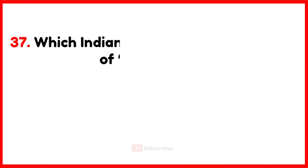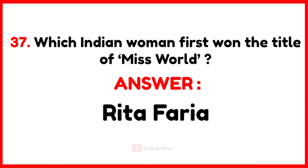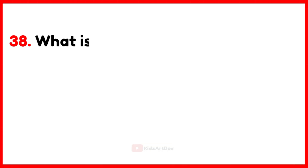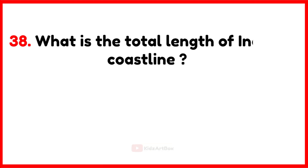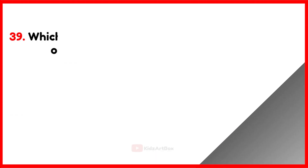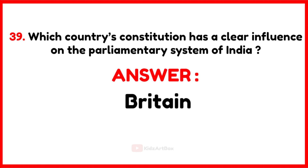Which Indian woman first won the title of Miss World? Rita Faria. What is the total length of India's coastline? 7516 km. Which country's constitution has a clear influence on the parliamentary system of India? Britain.